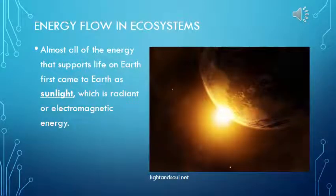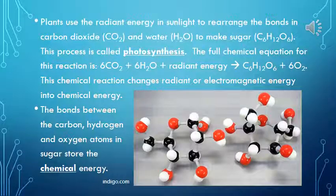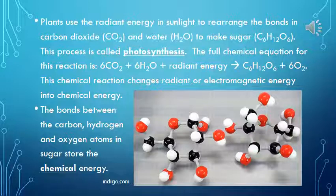Energy Flow in Ecosystems: Almost all of the energy that supports life on Earth first came to Earth as sunlight, which is radiant or electromagnetic energy. Plants use the radiant energy in sunlight to rearrange the bonds in carbon dioxide and water to make sugar — a process called photosynthesis. The full chemical equation is: 6CO₂ + 6H₂O + radiant energy → C₆H₁₂O₆ + 6O₂. This reaction converts radiant energy into chemical energy.